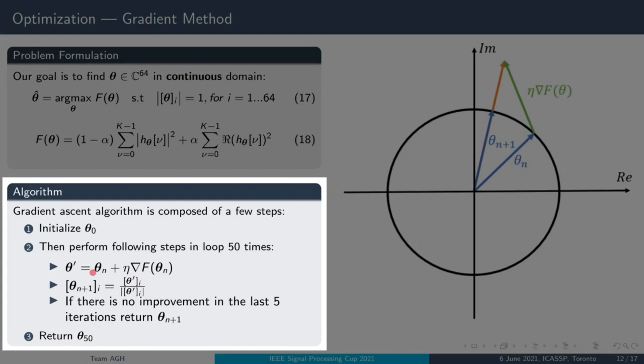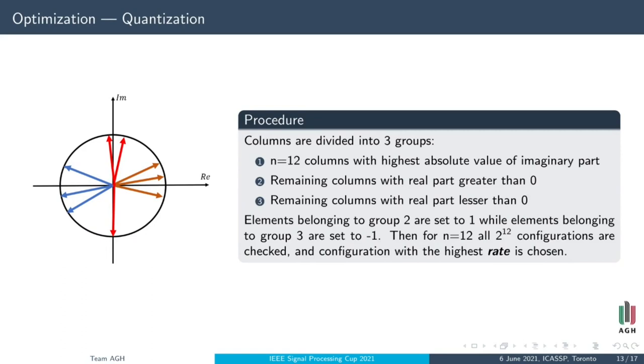In the next step, we perform quantization. We assign sign of the real part to elements with high absolute value of the real part. We also choose 12 so-called hesitant elements. We check all two to the power of 12 configurations for them and pick results with the best rate.